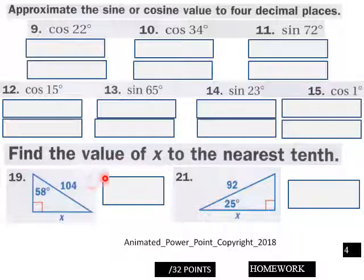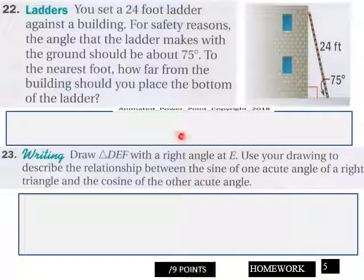And then down here, number 19, find the value of x to the nearest tenth. So find the value of x here to the nearest tenth. You got 32 points here on page four.